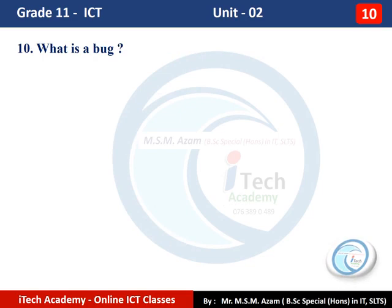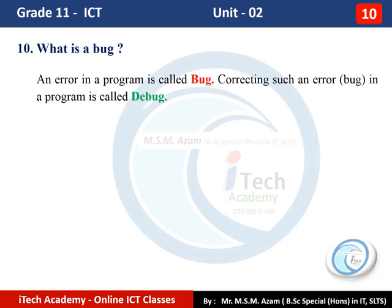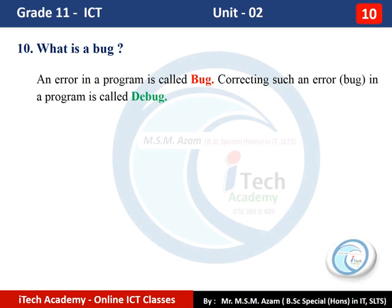Question Number 10: What is a bug? In IT, a bug means an error in a computer program. When we write a computer program, there may be different types of errors — logical errors, runtime errors, syntax errors, and so on. These errors in a program are called bugs. Correcting such errors in a program is called debugging.